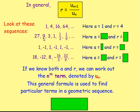For the next one, you've got twenty-seven, nine, three, one, one-third, one-ninth. The value of a would be twenty-seven — it's your first term. And r, your common ratio, is going to be one-third. If you do nine divided by twenty-seven, that's a fraction of nine over twenty-seven, which simplifies to one-third. So really you're dividing by three every time, but you would say the common ratio is one-third. You could also have done three divided by nine, or one-ninth divided by one-third. Either way, you would end up with one-third for your common ratio.